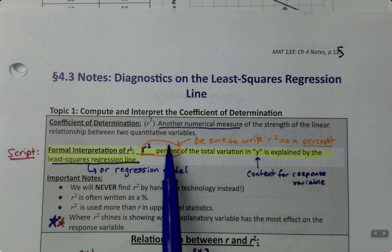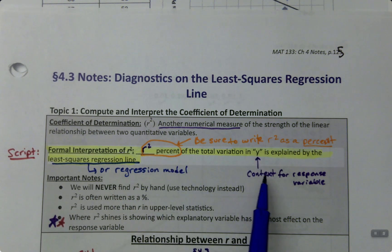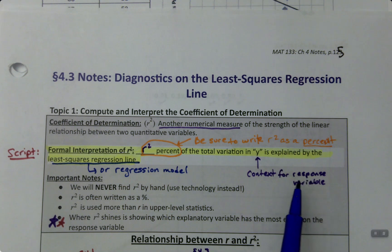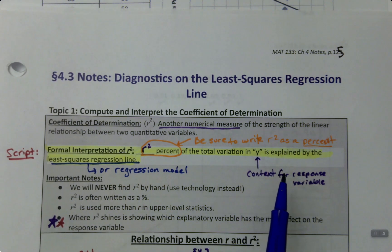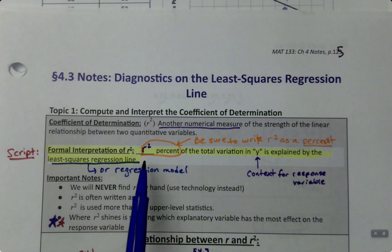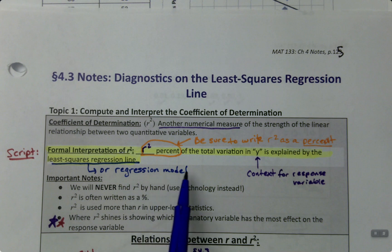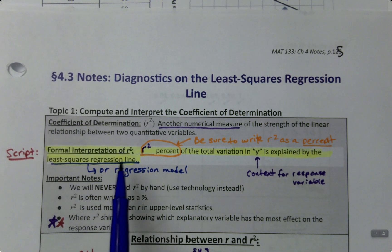You want to be sure to write that R-squared as a percentage, not as a decimal. You say: R-squared percent of the total variation in Y—that's the one time you have to write something of your own, giving the context for the Y variable, the response variable—is explained by the least squares regression model or line.